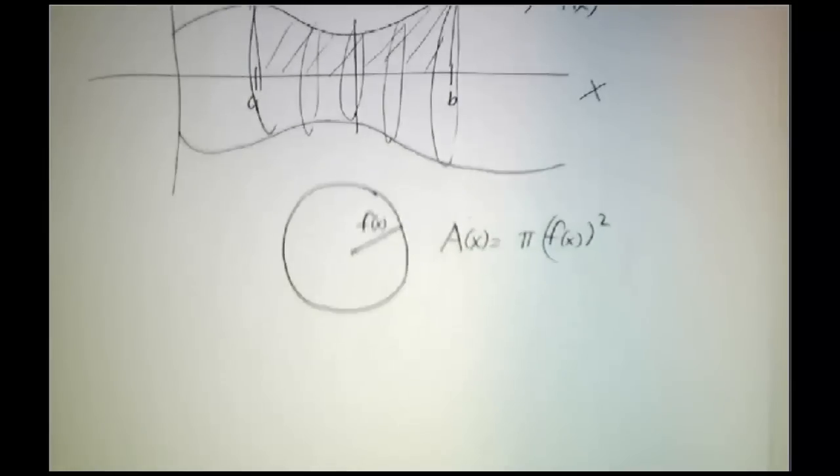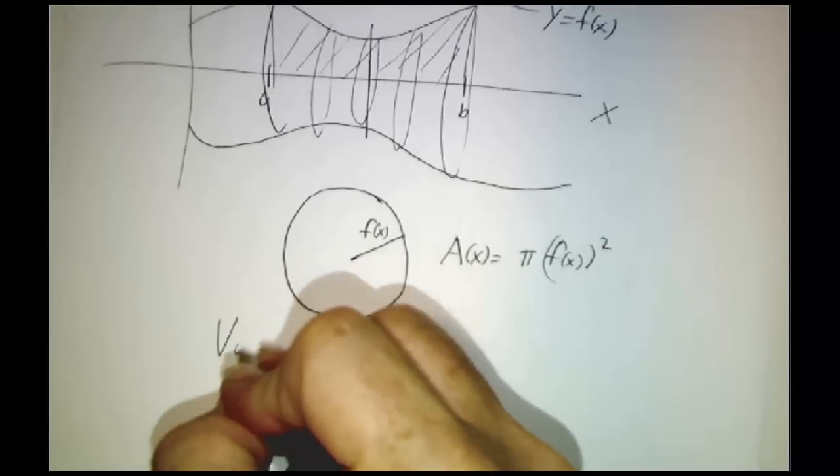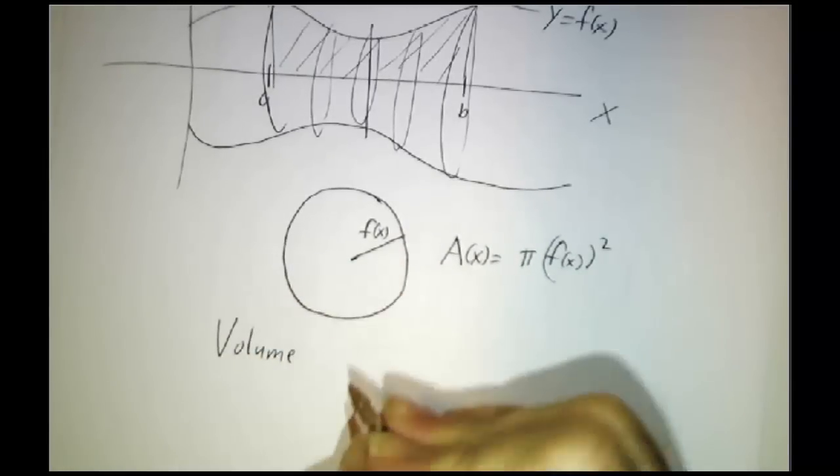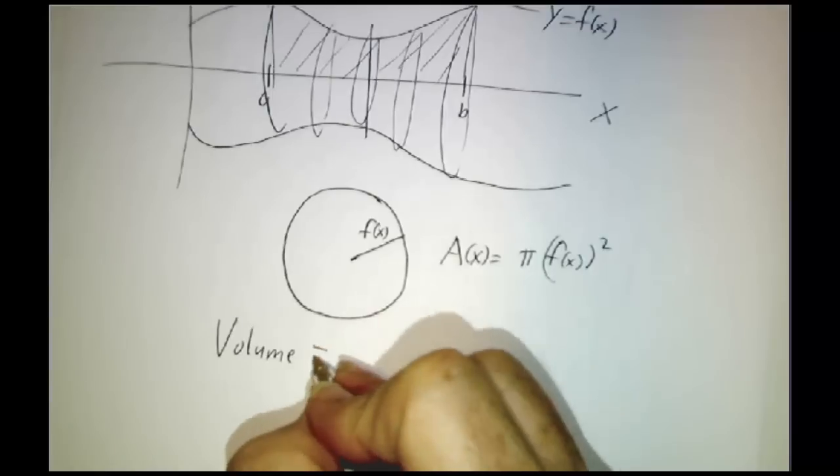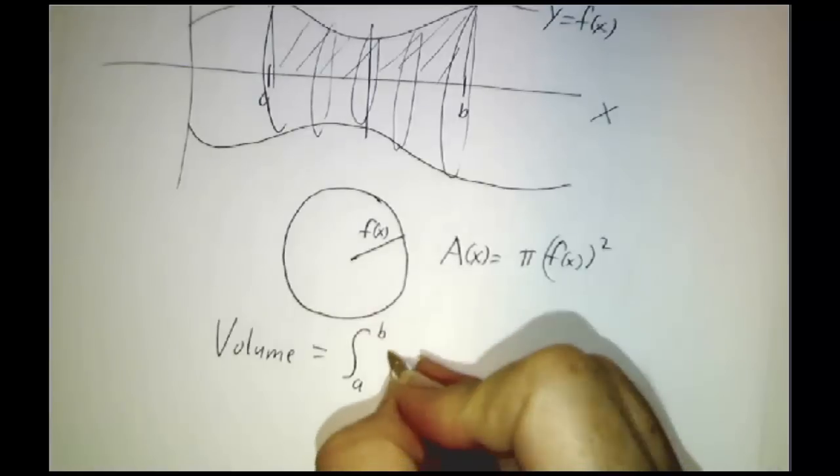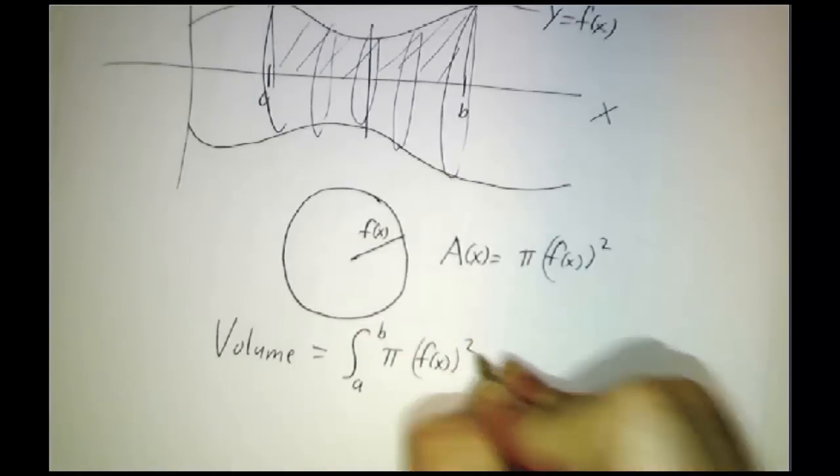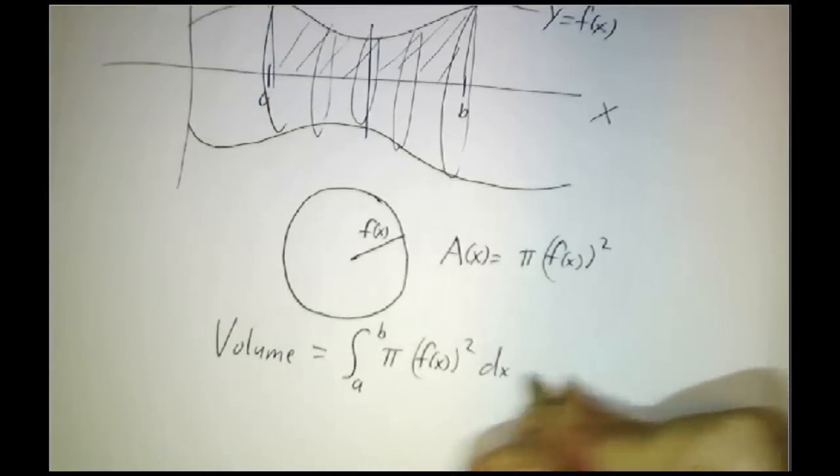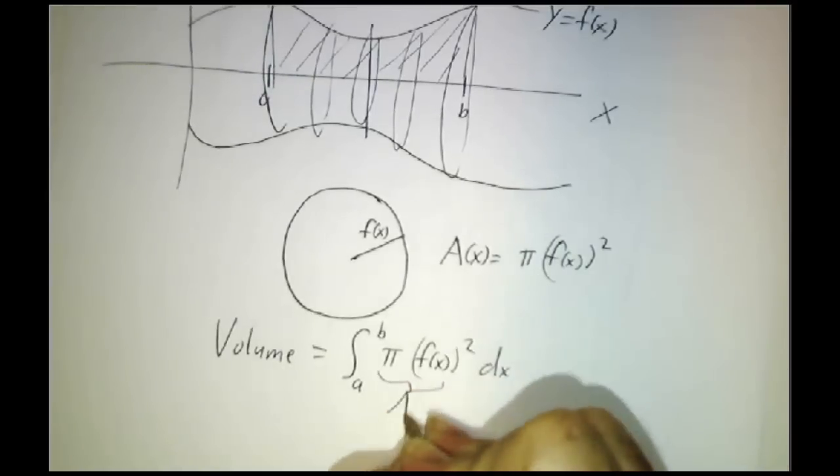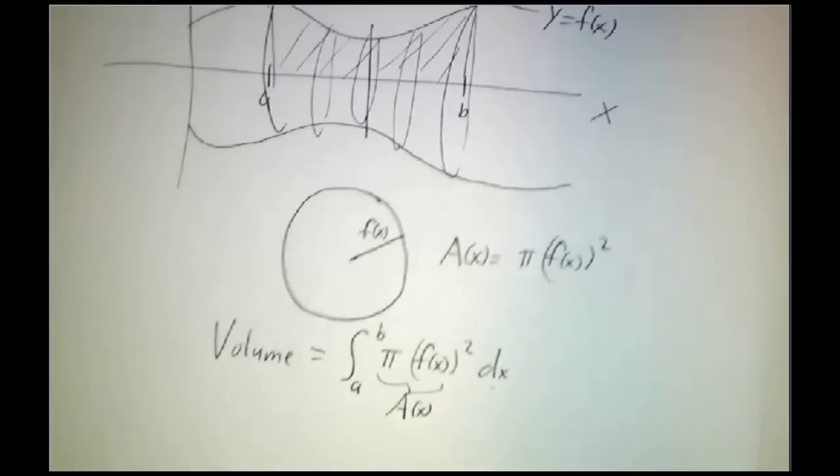And so the volume of our solid of revolution is the integral from a to b of pi times f(x) squared dx. Because after all, it's always the integral of A(x) dx.